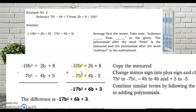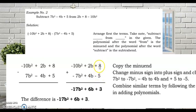Now combine similar terms. For the b² terms: −10b² and −7b² have the same sign, so copy the common sign and add: 10 + 7 = 17, giving −17b². For the b terms: 4 + 2 = 6, giving +6b. For the constants: 8 and −5 have different signs, so get the difference: 8 − 5 = 3, and the sign of the greater number is positive, giving +3. Therefore the answer for Example 2 is −17b² + 6b + 3.